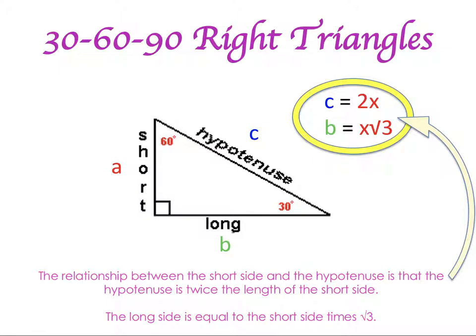There's a relationship between each of them — it's what we're going to call our formula. What we see here is that our short side is going to be our key factor, that's kind of where we start. When we look at the hypotenuse, we can see the hypotenuse is twice the length of the short side. And then the long side is the same as the short side, but you also have to multiply it by the square root of 3.